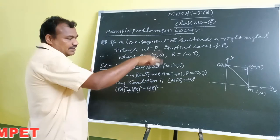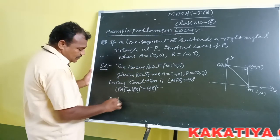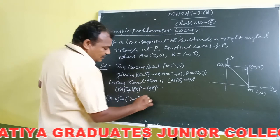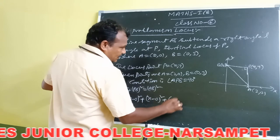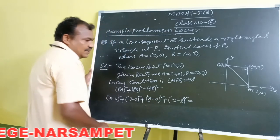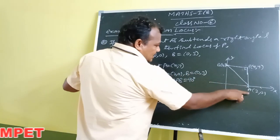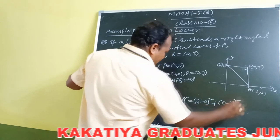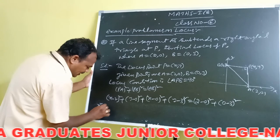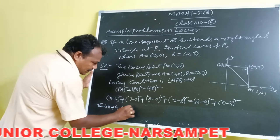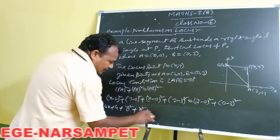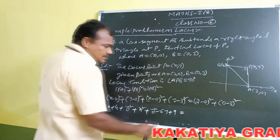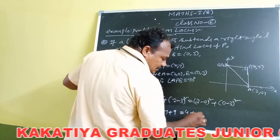PA² is the square of the distance between P and A: (x minus 2)² plus y². PB² is x² plus (y minus 3)². AB² is (2 minus 0)² plus (0 minus 3)², which equals 4 plus 9 equals 13. Expanding: x² minus 4x plus 4 plus y², plus x² plus y² minus 6y plus 9, is equal to 4 plus 9.